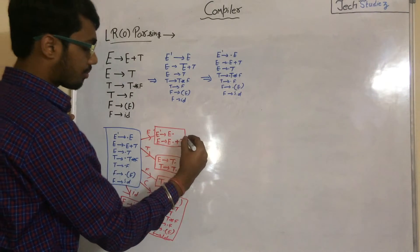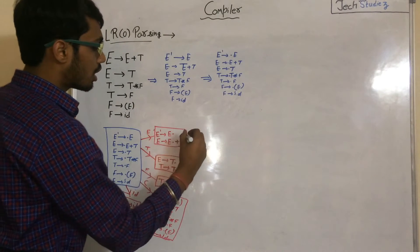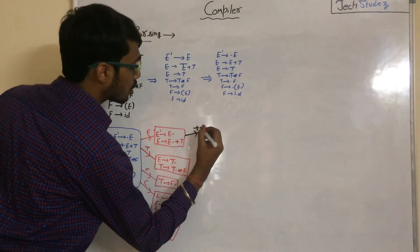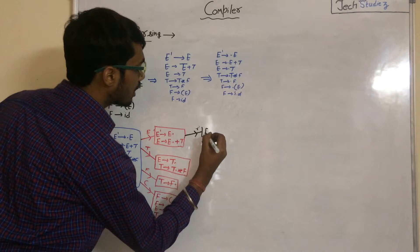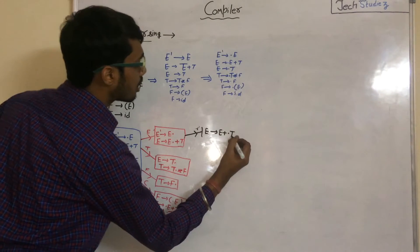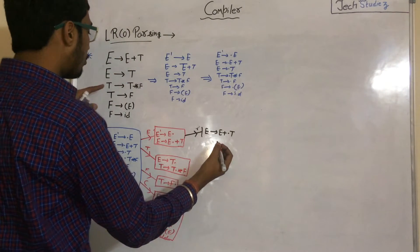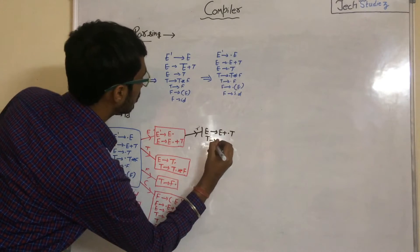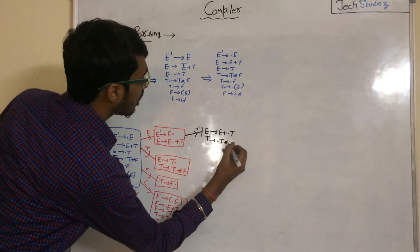Apply GOTO with id — what we get is F to id·. Now on the first transition, apply GOTO with plus sign — what we get is E to E plus ·T. We have to add all productions from T: T to ·T star F.